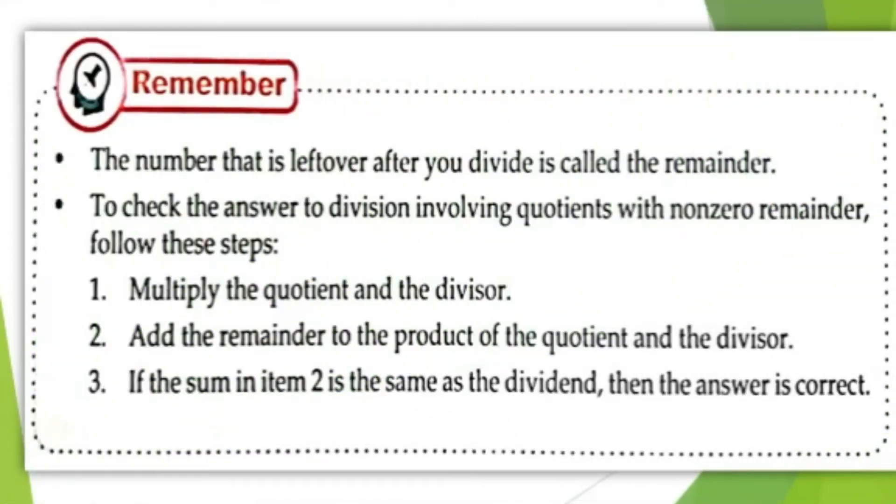Always remember class, the number that is left over after you divide is called the remainder. To check the answer to division involving quotients with non-zero remainder, follow these steps: 1) Multiply the quotient and the divisor. 2) Add the remainder to the product. 3) If the sum is the same as the dividend, then the answer is correct.